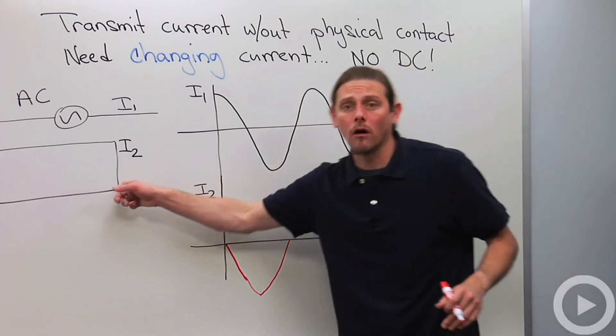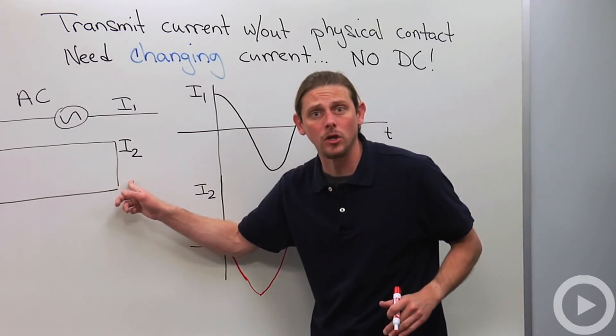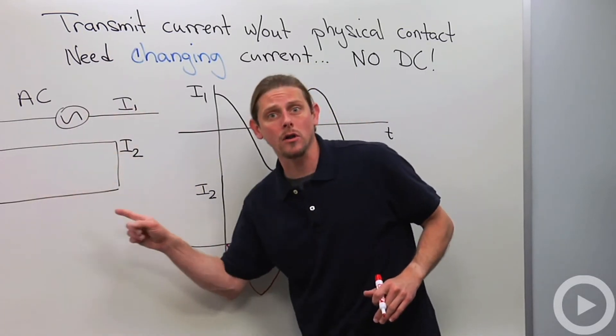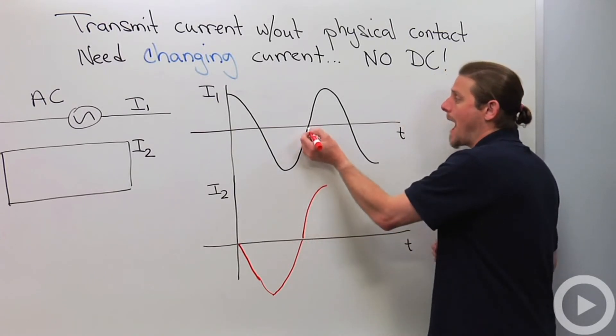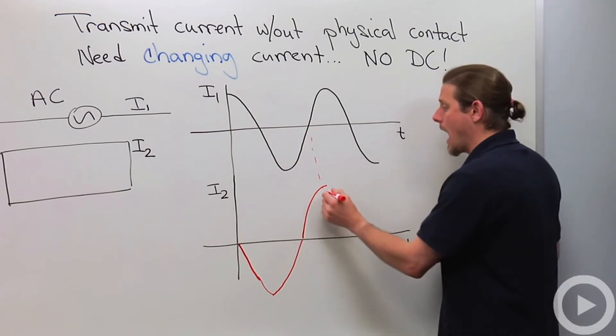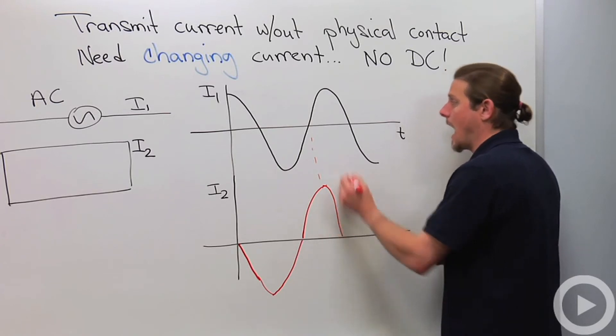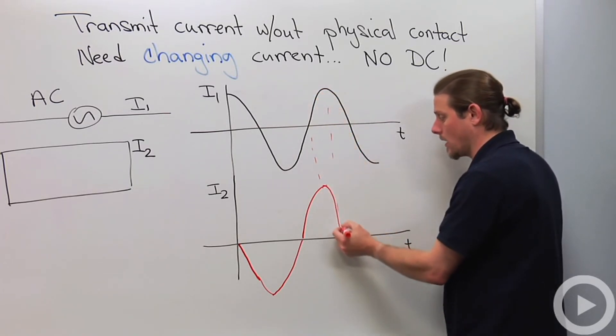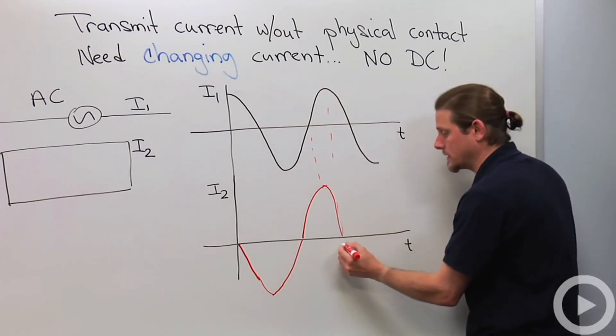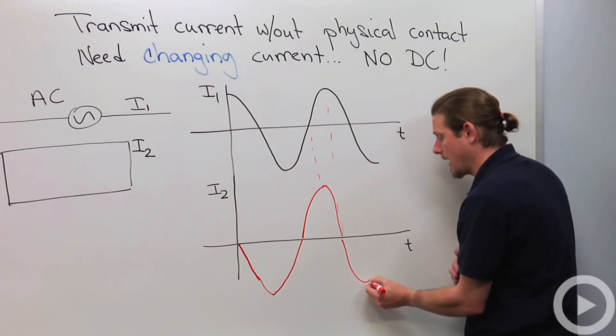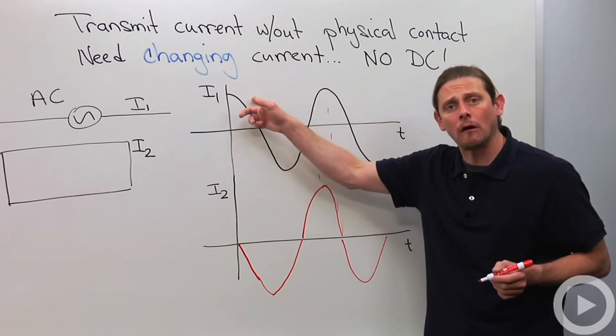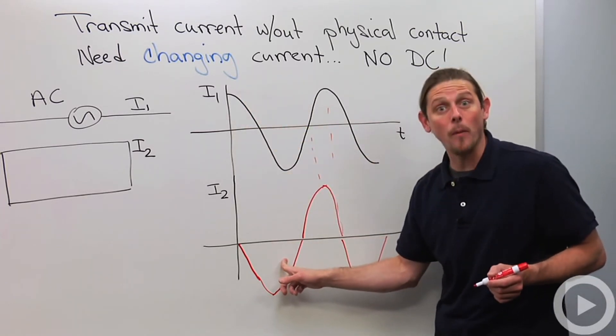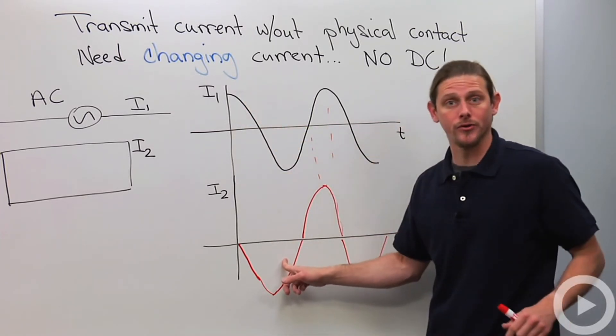Now this current generated in the secondary loop will be counterclockwise again, so positive. It'll go positive, maximum right here, and then down, still positive, until here where this current is now decreasing, and then it'll be negative like that. So you can see that we input an alternating current, and our output current will also be alternating.